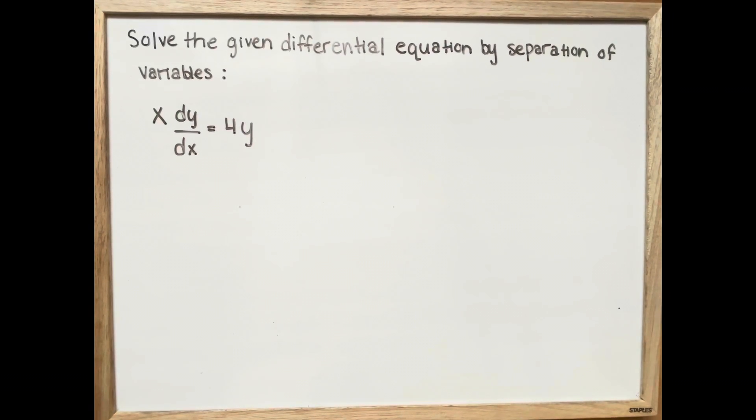Solve the given differential equation by separation of variables. x multiplied by dy over dx is equal to 4y.